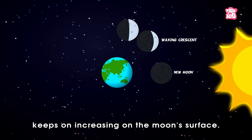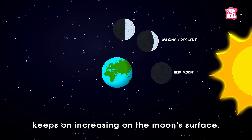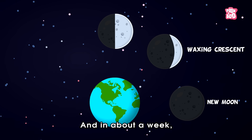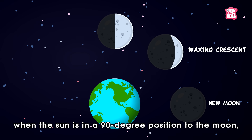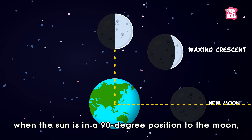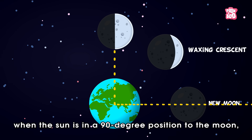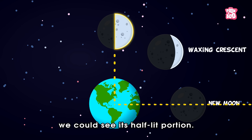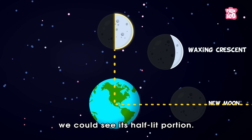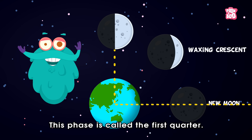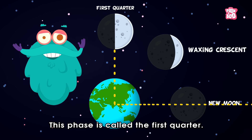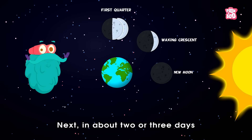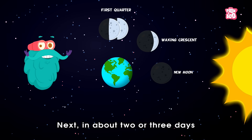And as the moon continues its orbital journey, the sun's reflection keeps on increasing on the moon's surface, and in about a week, when the sun is in a 90-degree position to the moon, we can see its half-lit portion. This phase is called the first quarter.